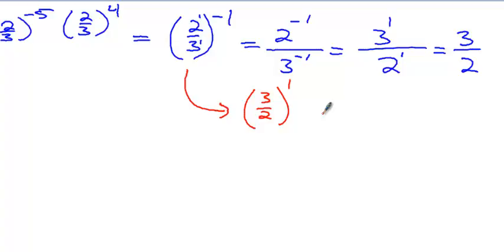So you can actually take this and go directly to 3 halves to the first. So if you take the reciprocal of the fraction, that negative sign will flip and change. Everybody okay with that? Because that's what a reciprocal actually means is it's the negative exponent of it. And then 3 to the first is 3, 2 to the first is 2. Either method works.